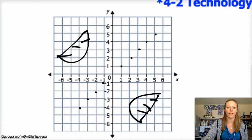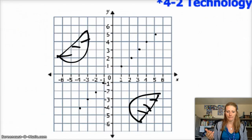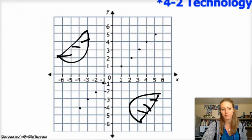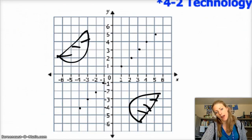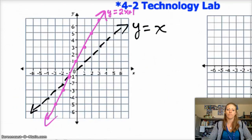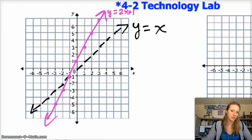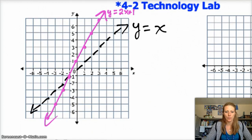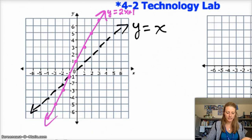So if we actually have a function, say for example a line y equals 2x plus 1, if you want to graph it, you can graph its inverse by reflecting it over the line y equals x. So y equals 2x plus 1 has a y-intercept of 1 and a slope of 2, and then the black is the line y equals x. So to get the inverse, you have to reflect the pink line over the black line.